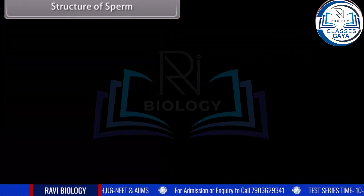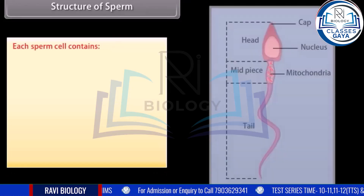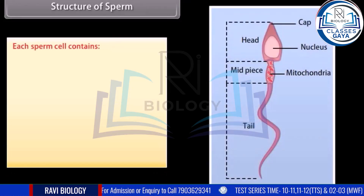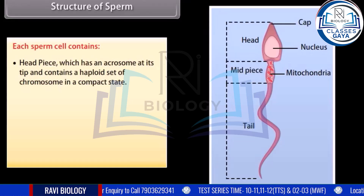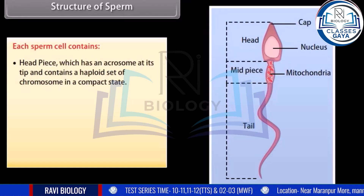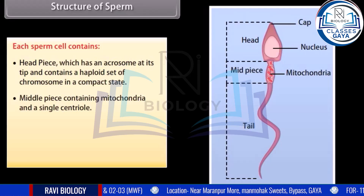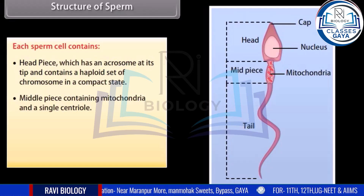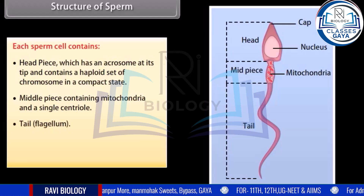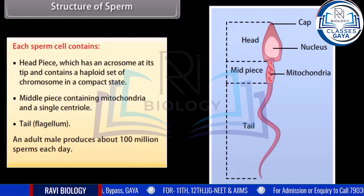Each sperm cell contains a headpiece, which has an acrosome at its tip and contains a haploid set of chromosomes in a compact state. The middle piece contains mitochondria and a single centriole. The tail or flagellum enables motility. An adult male produces about 100 million sperms each day.